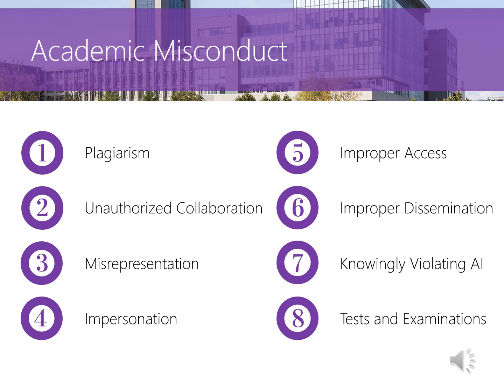Two, unauthorized collaboration — completing individual coursework, labs, assignments, or tests in collaboration with another student or person. Three, misrepresentation — when a student presents false research credentials or other documents like medical notes, or misrepresents material facts for any academic advantage. Four, impersonation — it is a violation to impersonate another person or enter into an arrangement to be impersonated by another individual. Five, improper access — it is a violation to gain access to confidential information like exam questions. Six, improper dissemination — it is a violation to publish, disseminate, or otherwise make available to a third party confidential information without prior consent; for example, posting exam or lab questions to public domains like Chegg without the instructor's consent.